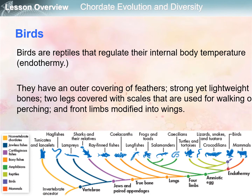After the modern reptiles, then the dinosaur era, now come the birds. Birds are reptiles that regulate their internal body temperature — a characteristic called endothermy, meaning they are warm-blooded and can control their internal body temperature. Birds have an outer covering of feathers, strong yet lightweight bones to enable flight, two legs covered with scales used for walking or perching, and front limbs modified into wings.